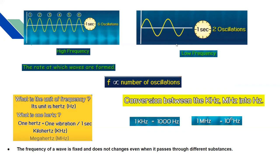Frequency is directly proportional to the number of oscillations or number of vibrations. Now what is the unit of frequency? Its unit is hertz, represented by capital H and small z. What is one hertz? One hertz is equal to one vibration per second. One vibration or one oscillation in one second is known as one hertz.